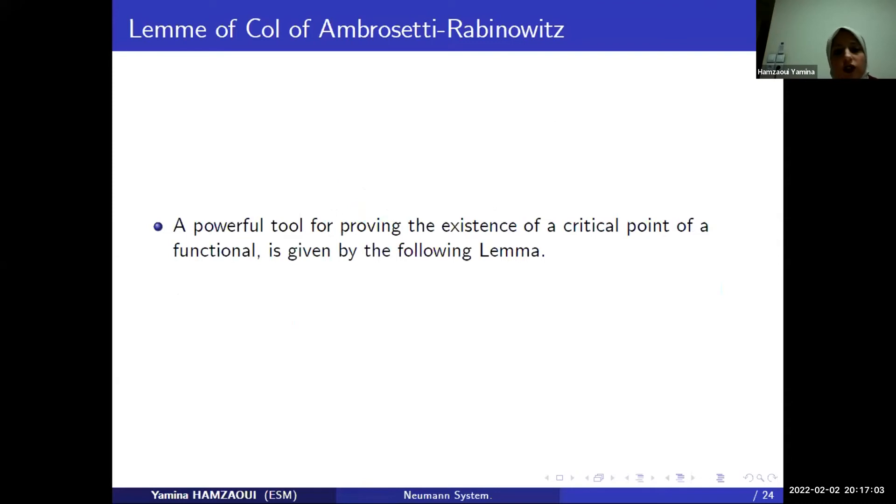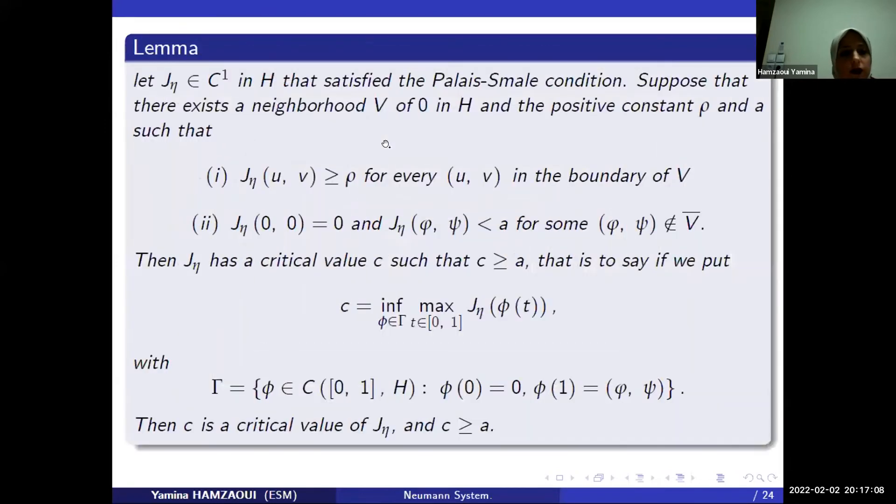A powerful tool for proving the existence of a critical point of a functional is given by the following lemma. The lemma is called the lemma of Ambrosetti-Rabinowitz. Let G eta, the continuous of class C1, that satisfies the Palais-Smale condition. We suppose that there exists a neighborhood V of 0 in H and the positive constants rho and A such that conditions I and II, the geometrical conditions, are verified.